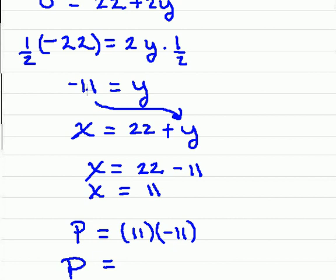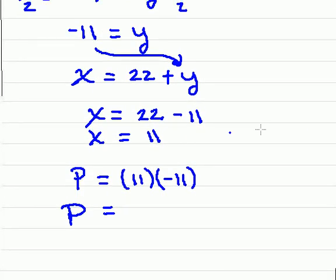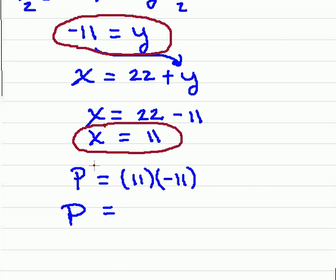Now to determine what x is, you're going to take this negative 11 and go back into where we solved for x and plug the negative 11 directly in for y. We have x is equal to 22 minus 11, therefore x is equal to 11. So your two numbers are going to end up being y equals negative 11 and x equals 11.